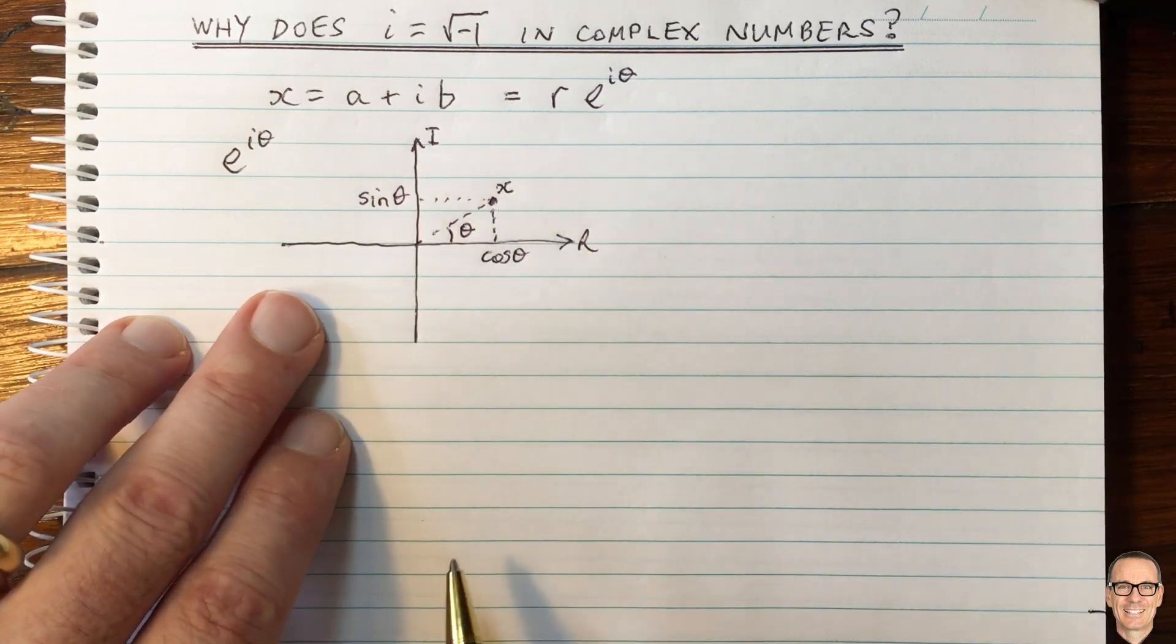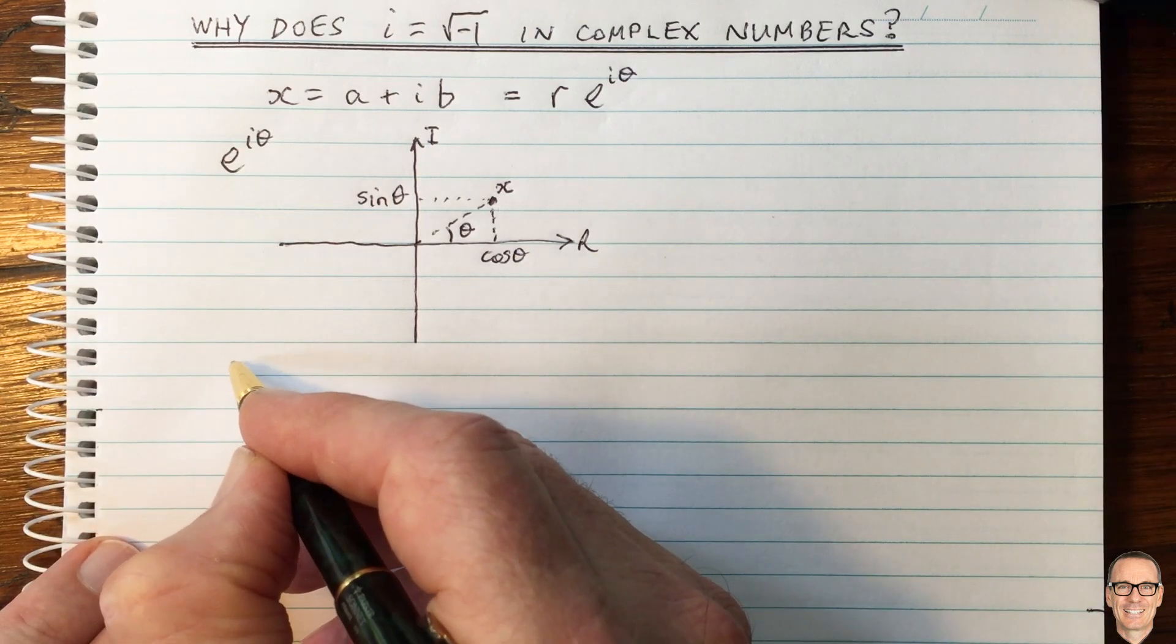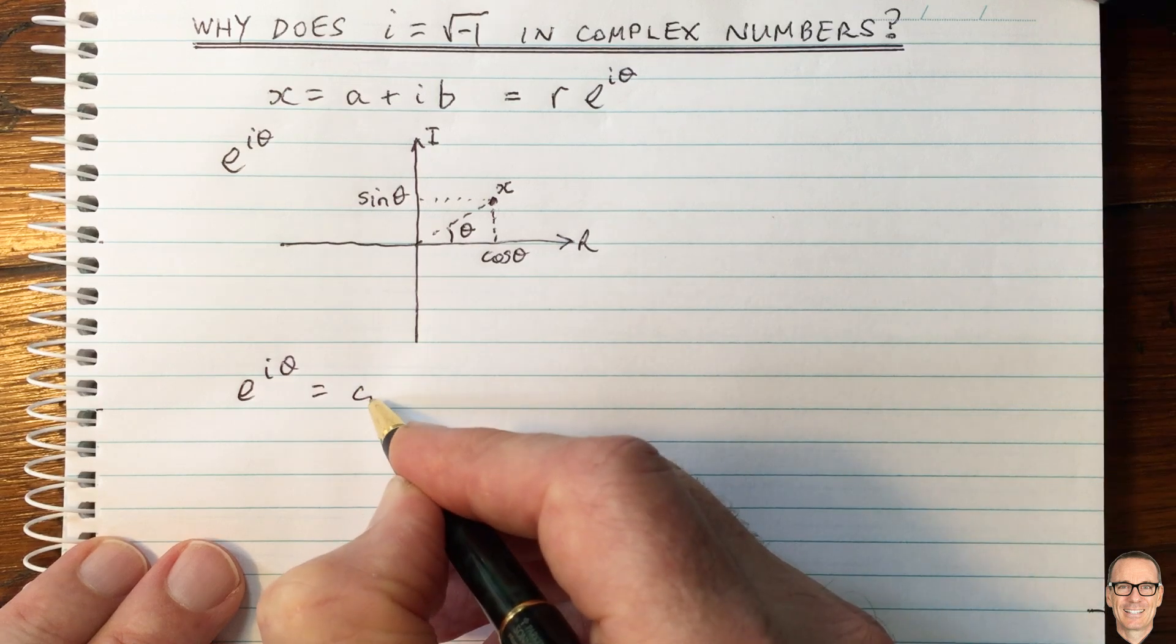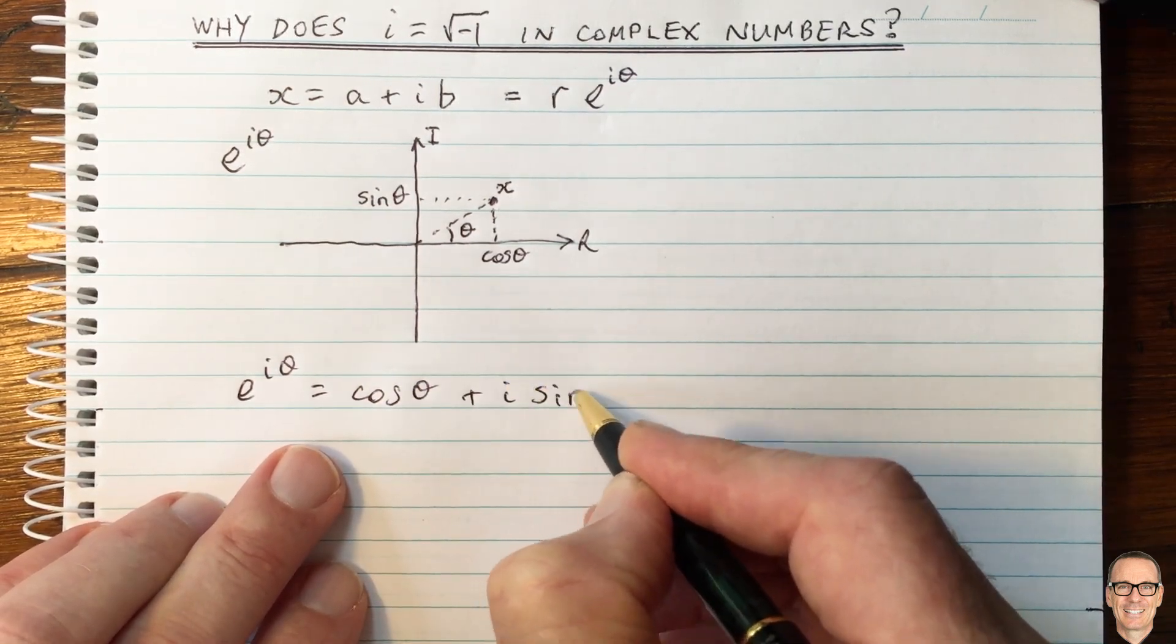Okay, this immediately gives us an expression that we can write down. We can write that e to the i theta equals cos, because that's the real part, cos of theta, plus i sine of theta.